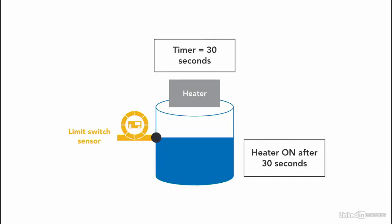A simple example in a manufacturing process: the heating of a liquid is to begin 30 seconds after a signal is received from a limit switch. We use a timer on delay set to 30 seconds and use the done bit to start the heating process.